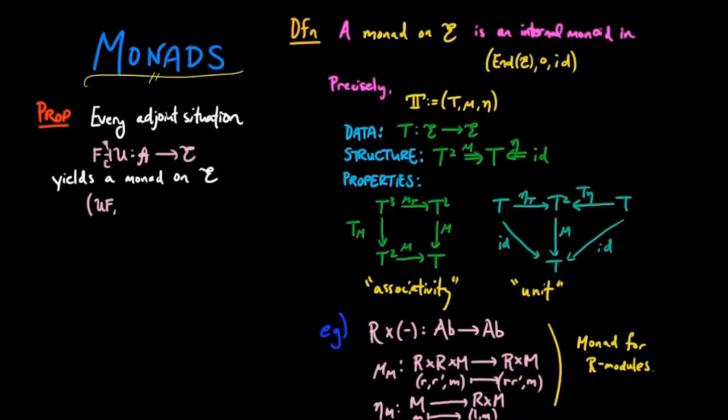Where the monad endofunctor is given by the composition of UF. The monad multiplication natural transformation is U epsilon F, where epsilon is the co-unit of the adjunction. And the unit, eta, is just going to be the unit of the adjunction. And we'll call this monad T. So let's prove this.